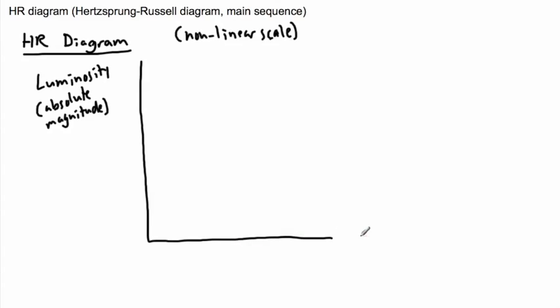And then on this bottom axis, well we could have what we call the spectral class. That we could say here. So if we had the spectral class, that would mean it would go O, B, A, F, G, K, M.